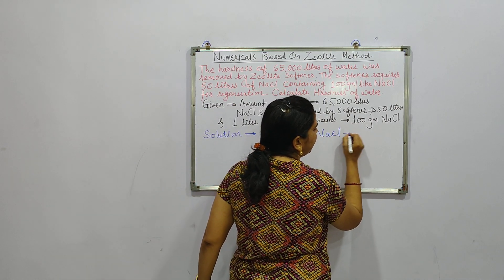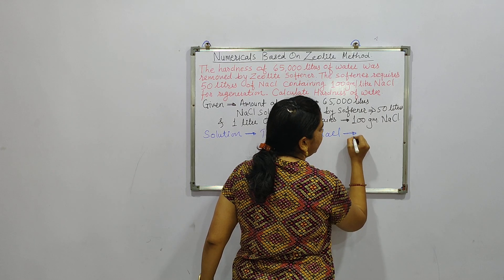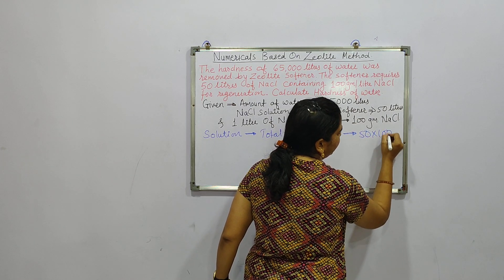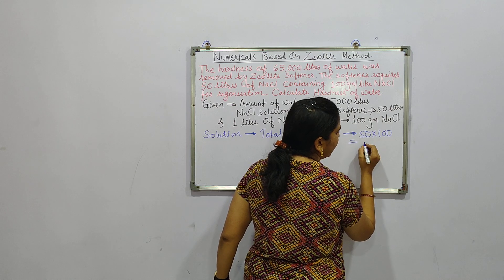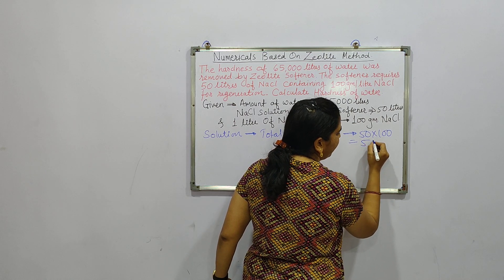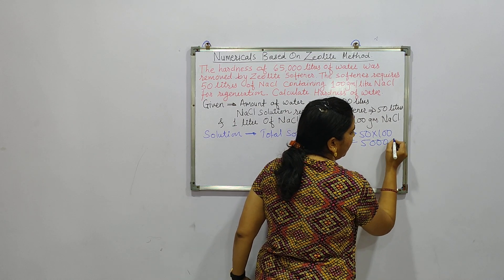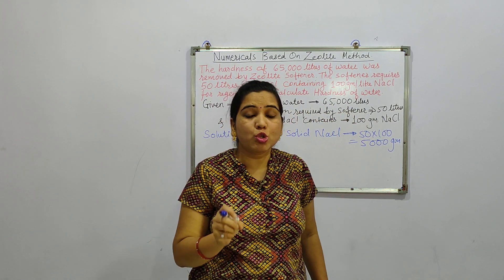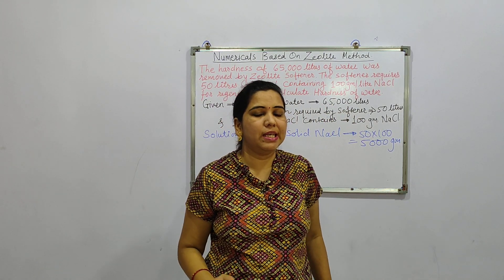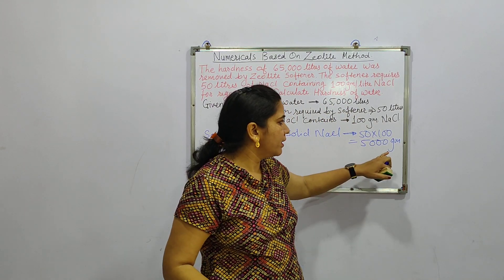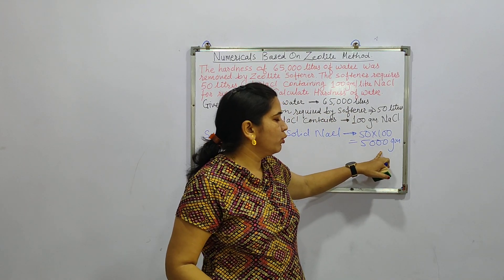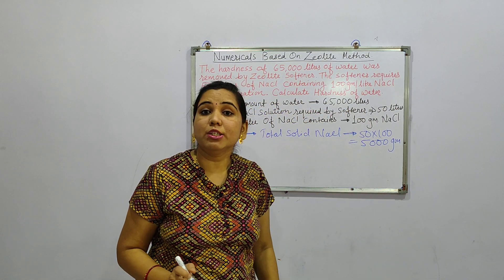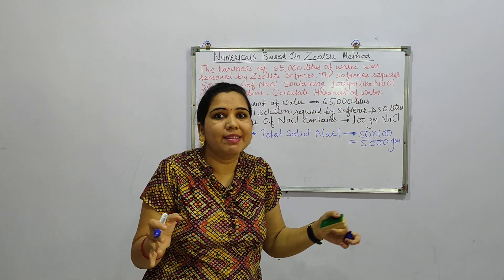Therefore, total solid NaCl required is 50 liters × 100 grams per liter, which equals 5,000 grams. So 5,000 grams of solid NaCl has been required to remove hardness from 65,000 liters of water.